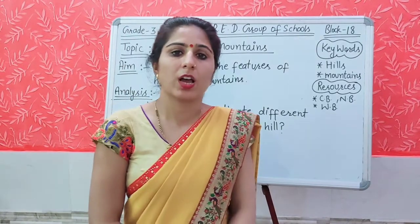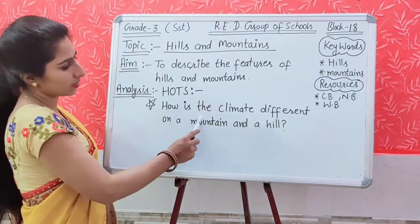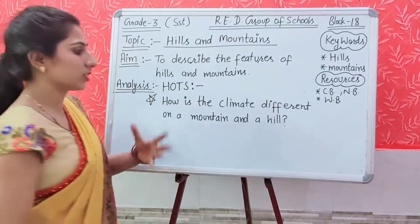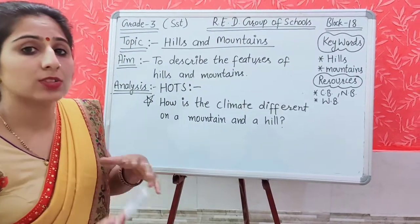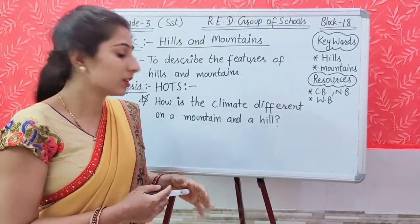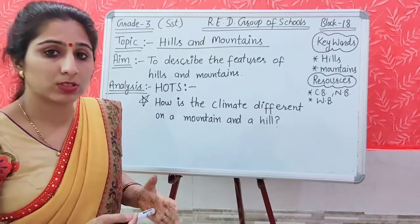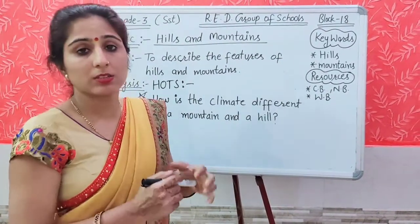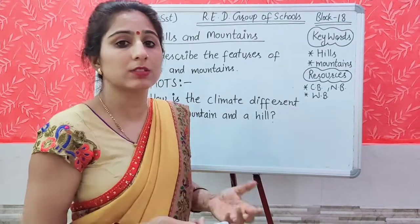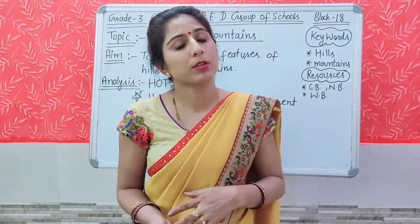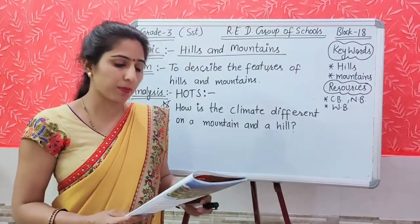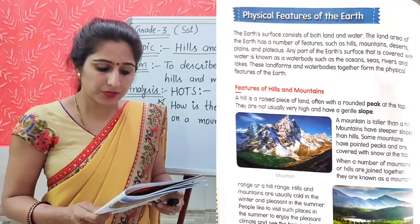Now it is time for the Higher Order Thinking question. How is the climate different on a mountain and a hill? Most mountains are covered with snow throughout the year, so the climate there is extremely cold. But on the hills, the climate is not that cold — it is pleasant and good.